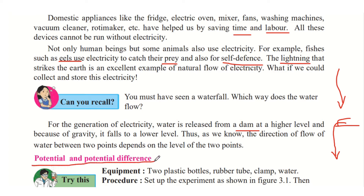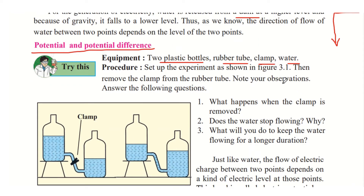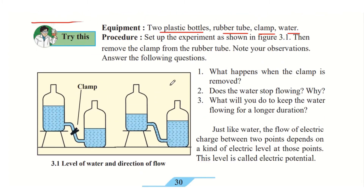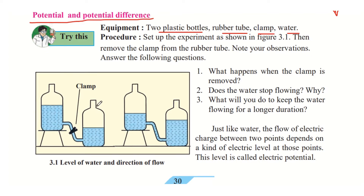Now we will study about potential and potential difference. In this experiment, the equipment required is two plastic bottles, a rubber tube, a clamp and some water. Two plastic bottles of equal dimensions are placed at different heights and connected using a rubber tube. Both bottles are filled with water, and a clamp prevents water from flowing through the tube initially.